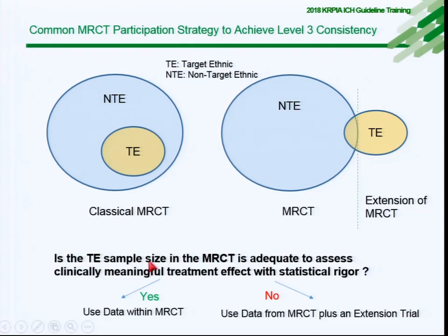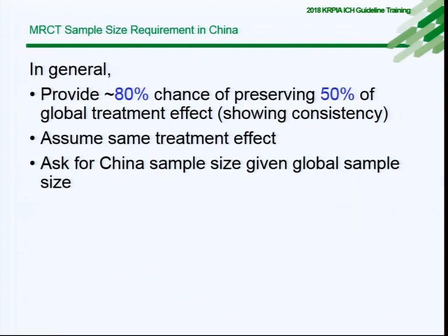If the target ethnic group sample size in the MRCT is adequate to assess a clinically meaningful treatment effect with statistical rigor, then we only focus on the data within the MRCT. If not, we consider an extension of the trial. In general, we apply Level 3 consistency — requiring an 80% chance of preserving 50% of the global treatment effect — and assume the same treatment effect between the subgroup and the total population.